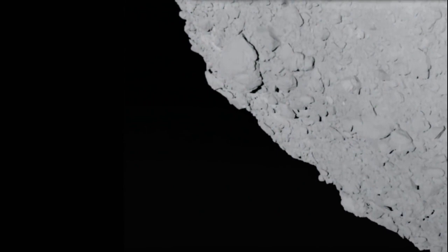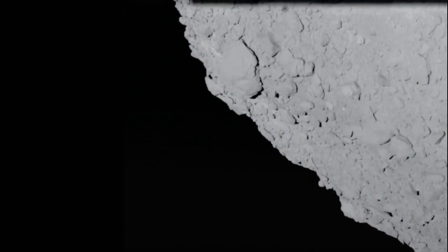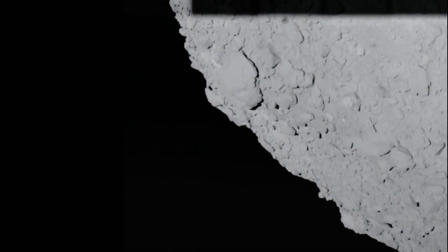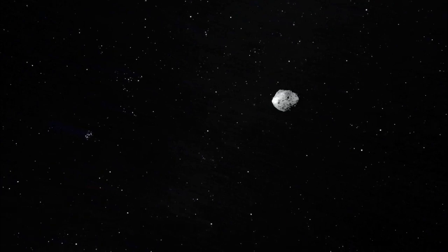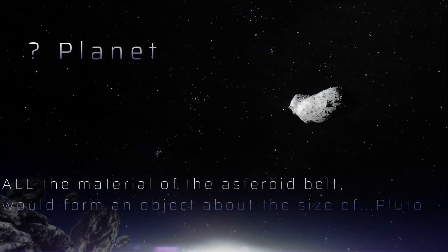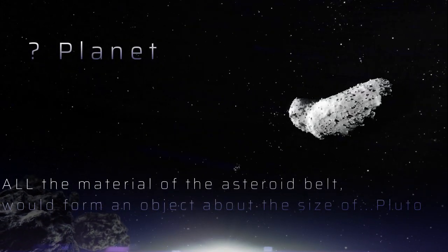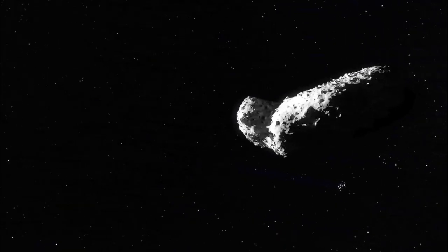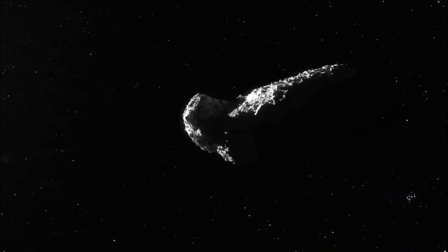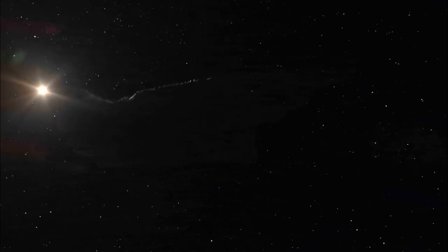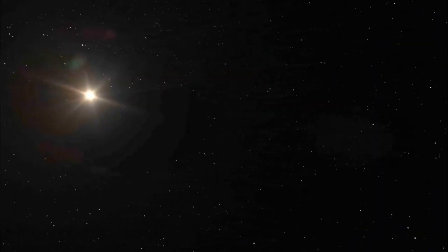In fact, if we got all the material in the asteroid belt and compacted it together, it would create an object about half the diameter of our moon — so roughly about the size of Pluto. There are about 600,000 known asteroids in the solar system.